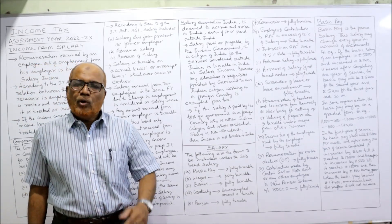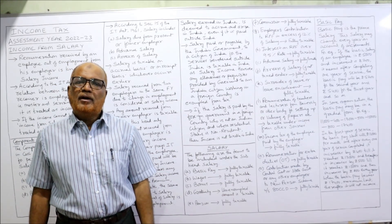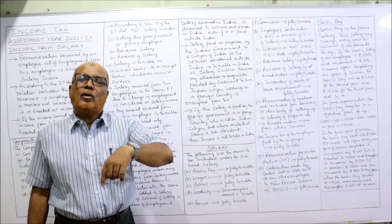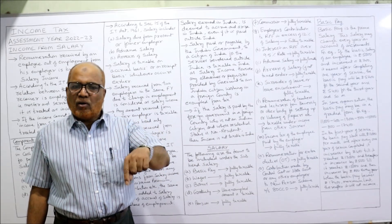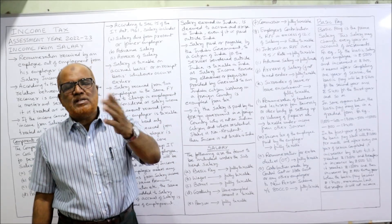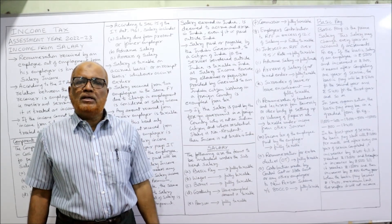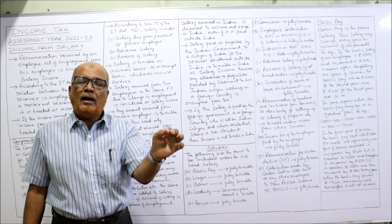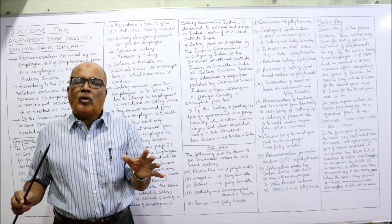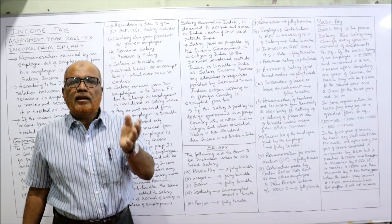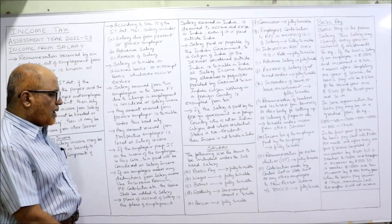Gratuity: in coming videos I will explain retirement benefits in detail. Gratuity is normally the amount paid by the employer to the employee at the time of retirement. It is given to both government and non-government employees. The unexempted amount of gratuity is taxable — out of the total amount received, some is exempted and the remaining is taxable. Pension: this is the amount received from a former employer after retirement. Income Tax Act says pension is also taxable under the subhead salary.